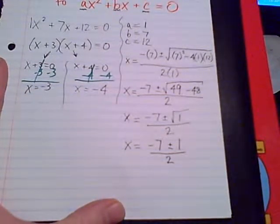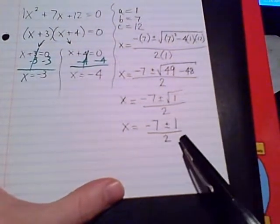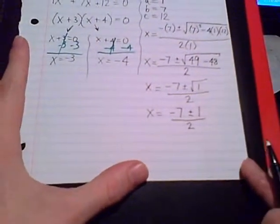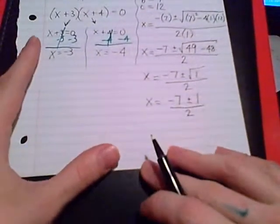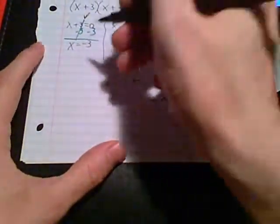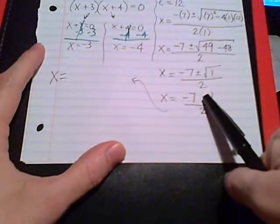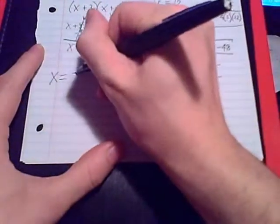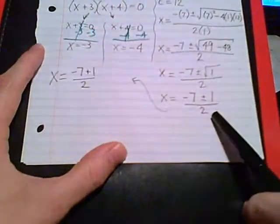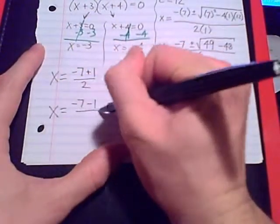Now we know that these quadratic equations give us two solutions. So now is the time for us to split this into two equations, one using the plus, one using the minus, to find our two solutions. So let's come up here where I have a little bit of space. x equals, so I'll write this once using that plus and once using the minus. Negative 7 plus 1 over 2. x equals negative 7 minus 1 over 2.